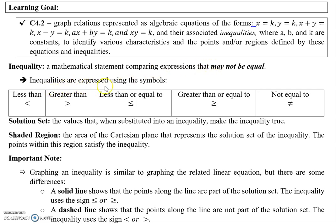Inequalities are expressed using these symbols. This symbol is called less than. This one is greater than. This one is less than or equal to. This one is greater than or equal to. And the last one is not equal to — that's an equal sign with a forward slash through it.